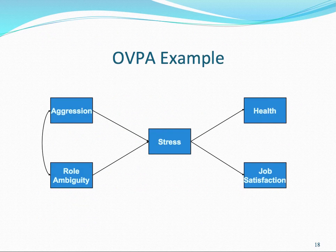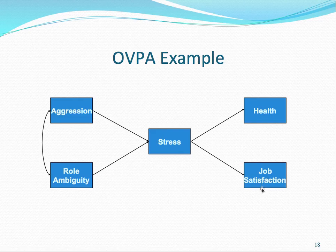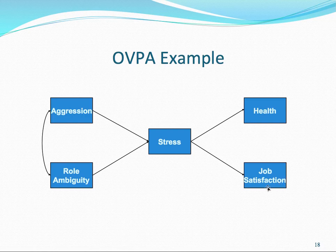Here is an example of an observed variable path analysis. As you can see, we only have boxes. In this particular case, the boxes represent the mean of the items for each particular construct—so job satisfaction was represented by two items, and this would just be the mean of those two items.